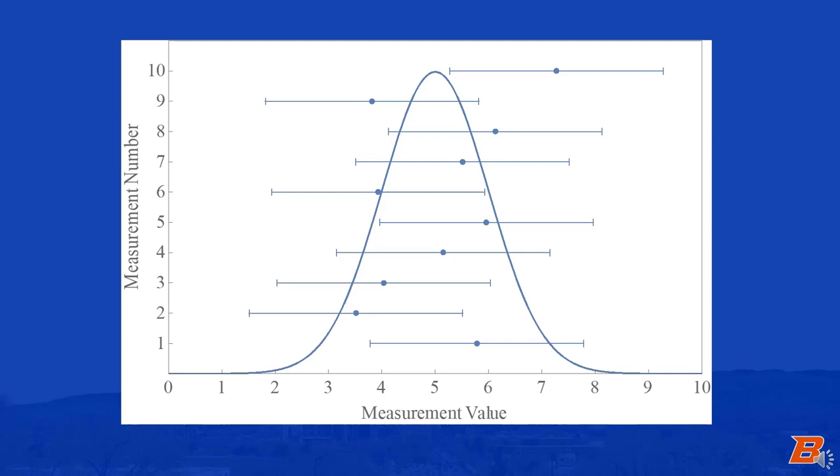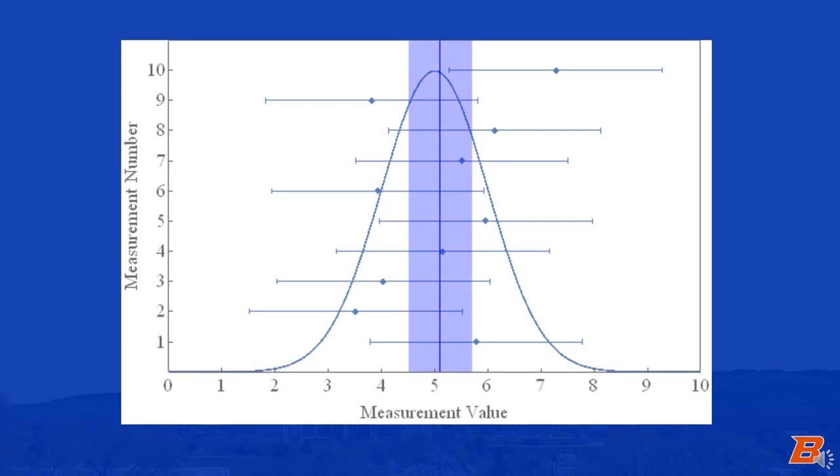Using the equations for weighted mean and standard error of the weighted mean, we find an average of 5.1 plus or minus 0.6. Notice that this averaging process means that we can determine the mean value to a much higher degree of certainty than we can with an individual measurement.